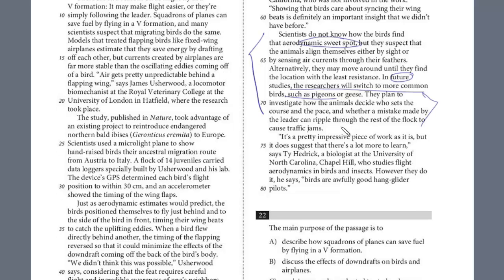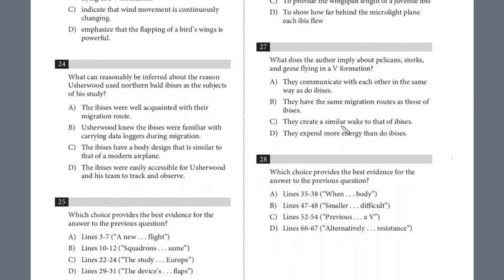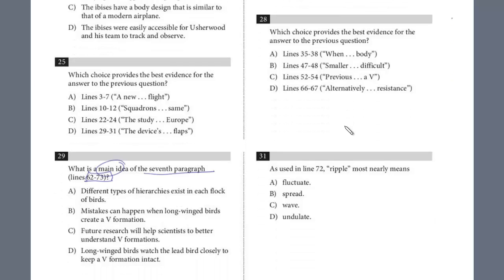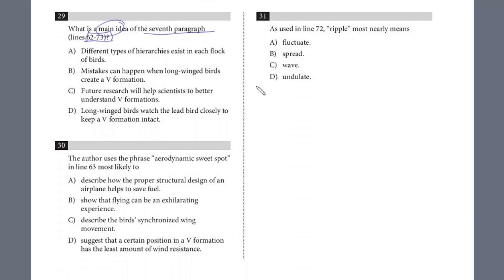Let's take a look at the answer choices for 29. Remember, we want the main idea of this whole paragraph. Different types of hierarchies exist in each flock of birds? No, that's not about hierarchies or pecking orders. Mistakes can happen when long-winged birds create a bee? That's not what this is about.